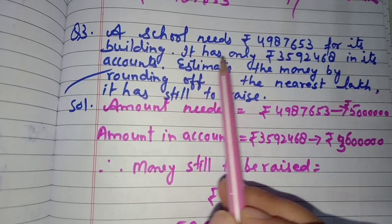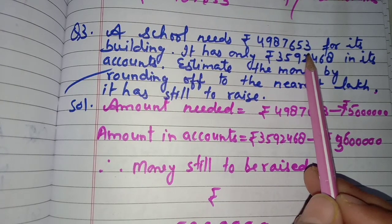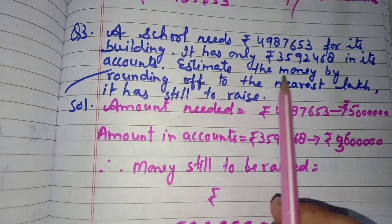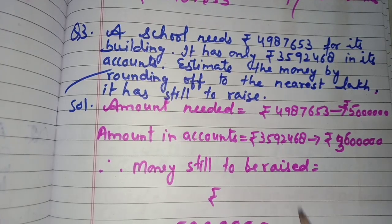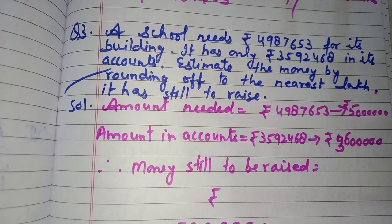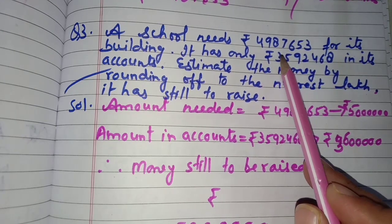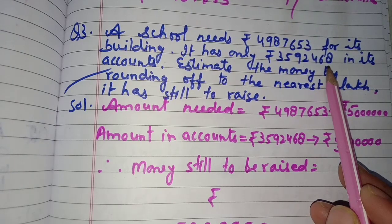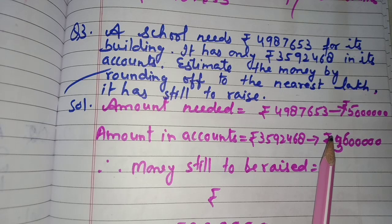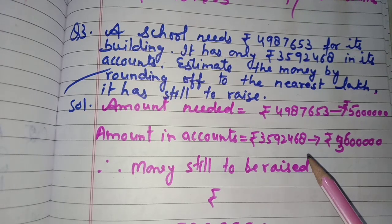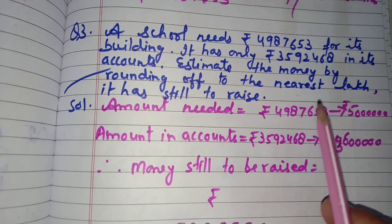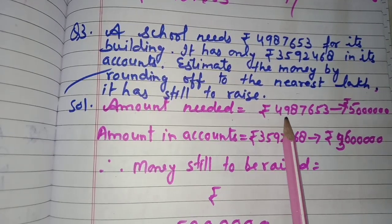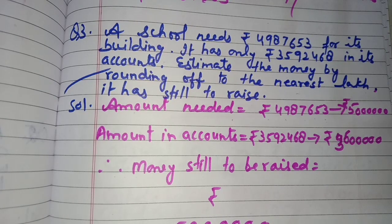Question number 3: A school needs rupees 49,87,653 for its building but has only rupees 35,92,468 in its accounts. Estimate, by rounding off to the nearest lakh, how much money it still has to raise. The school needs a new building but doesn't have enough funds, so it needs to raise the remaining amount.